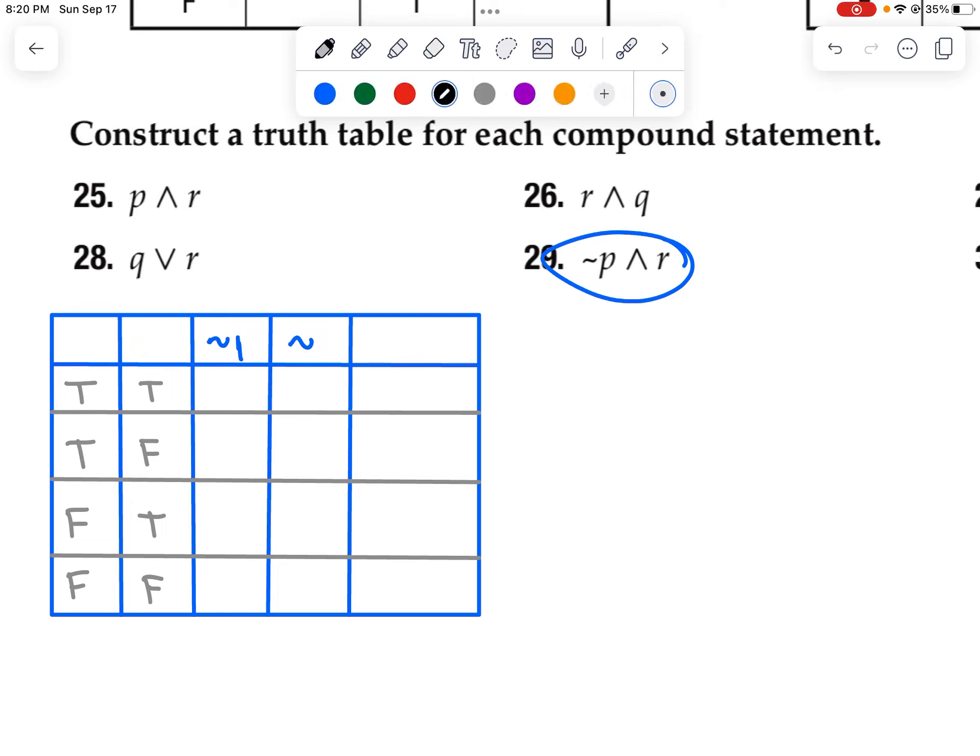So I'll just change this. I'll make this whatever letter I want. This could be, you know, T and S and not T and not S.